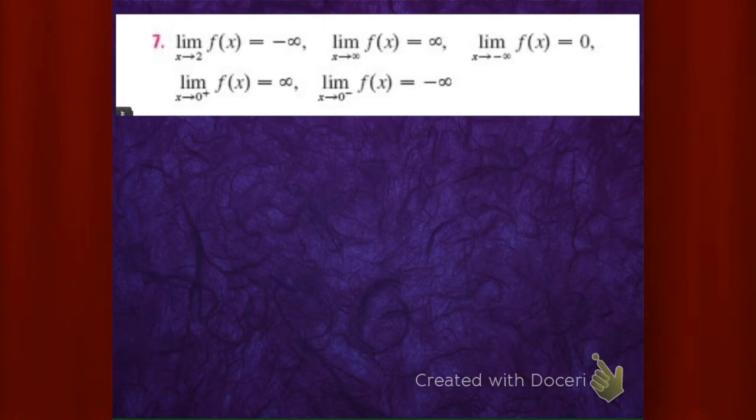We need the limit as x approaches 2 to be minus infinity. It's going down, down, down. And because they said it approaches 2, it's going to minus infinity from the left and it's going to minus infinity from the right.